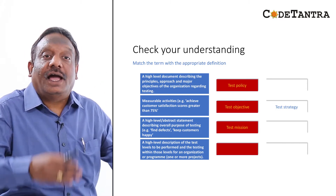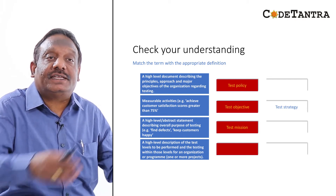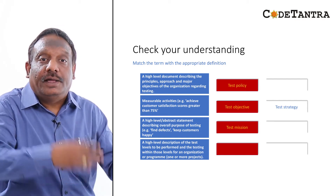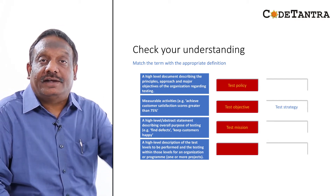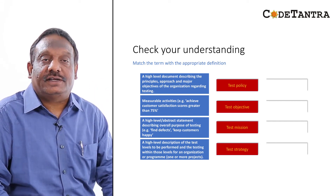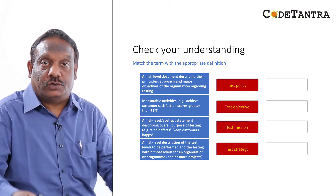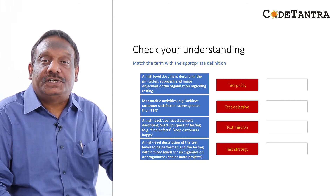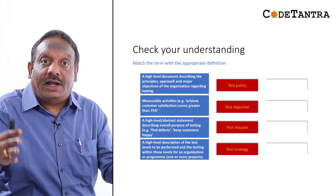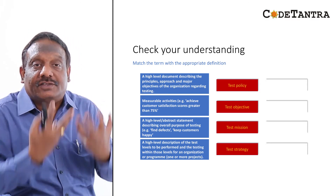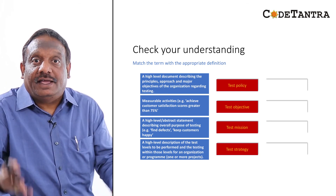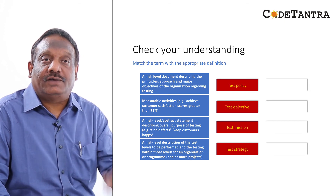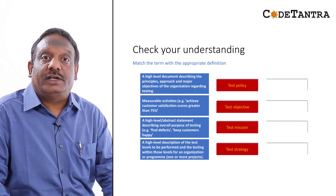The fourth definition — 'a high-level description of test levels to be performed and the testing within those levels for an organization or program of one or more projects' — is test strategy. So we've understood the definitions of test policy, test objective, test mission, and test strategy, and how they relate. Test planning takes all of these as inputs, operationalizes test processes into a test plan, and it is important for test managers to perform this activity well.